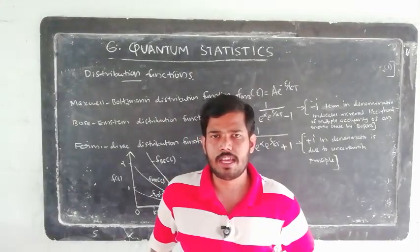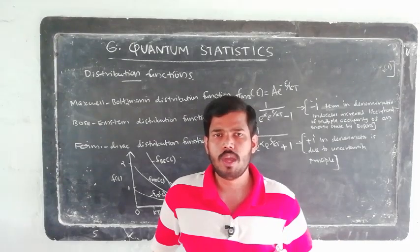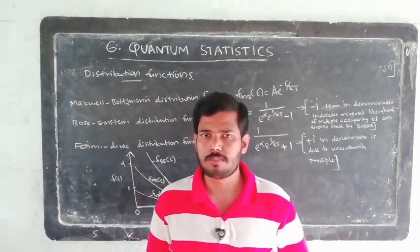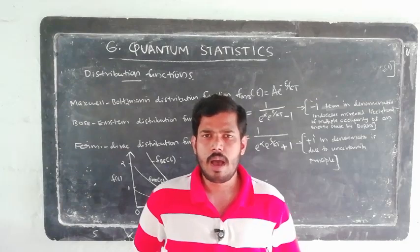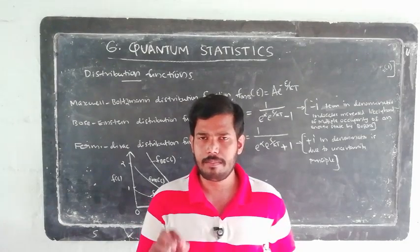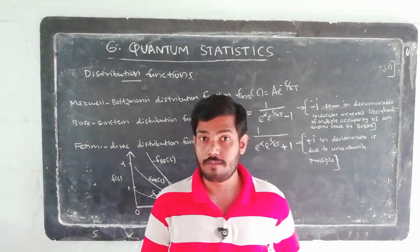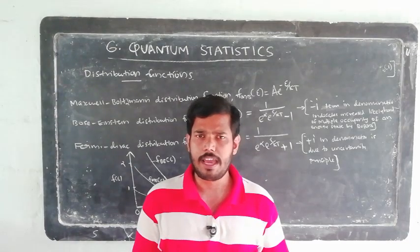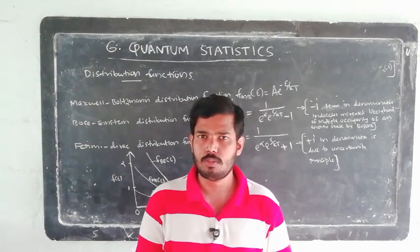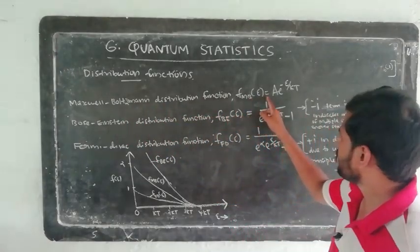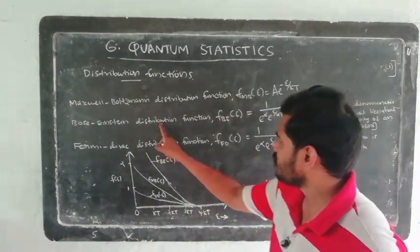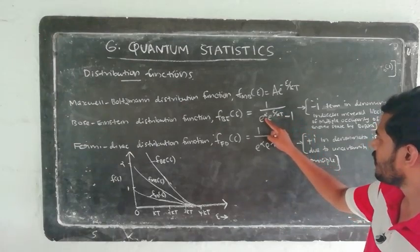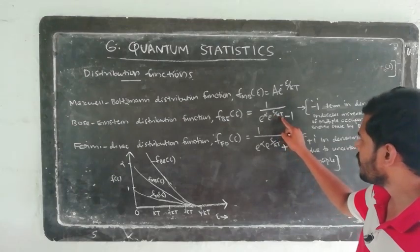The number of particles having energy between epsilon and epsilon plus d-epsilon is given by dN equal to F of epsilon times G of epsilon d-epsilon, where F of epsilon is the distribution function and G of epsilon d-epsilon is the number of states having energy between epsilon and epsilon plus d-epsilon. The Maxwell-Boltzmann distribution function F_MB of epsilon equals A times e raised to minus epsilon by kT. The Bose-Einstein distribution function F_B of epsilon equals 1 by [e raised to alpha times e raised to epsilon by kT minus 1], where k is the Boltzmann constant equal to 1.38 × 10⁻²³, and T is the temperature.